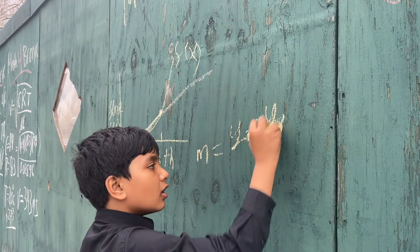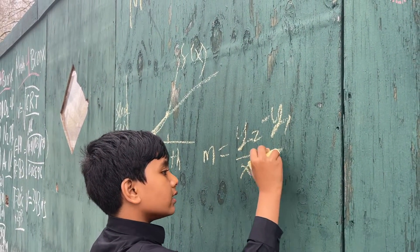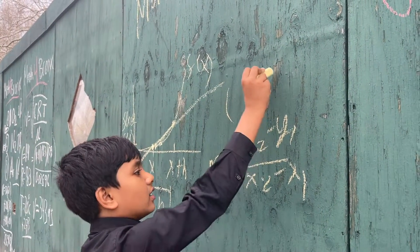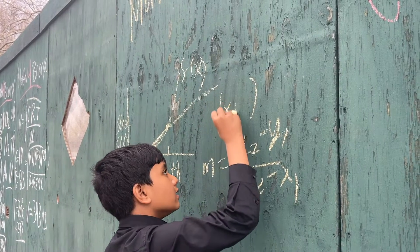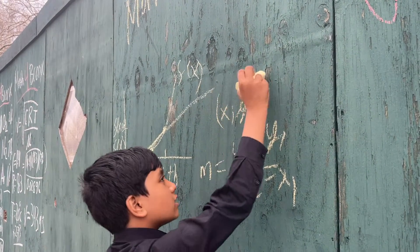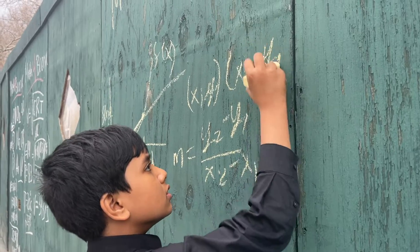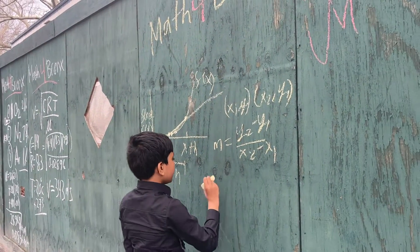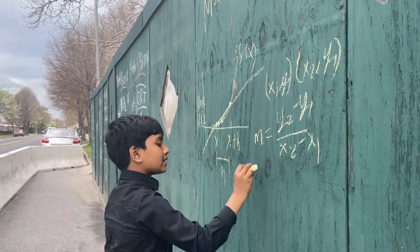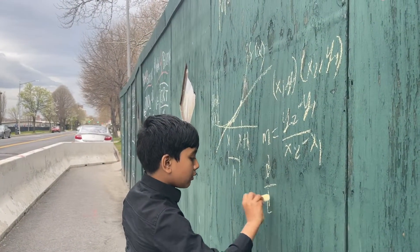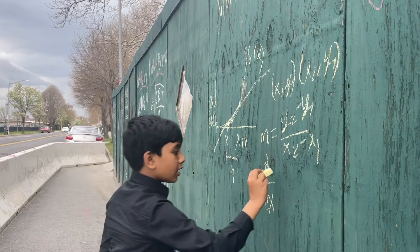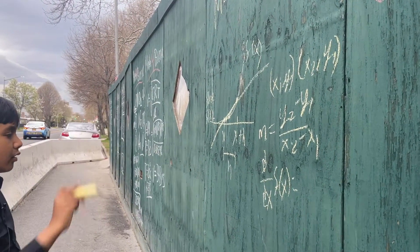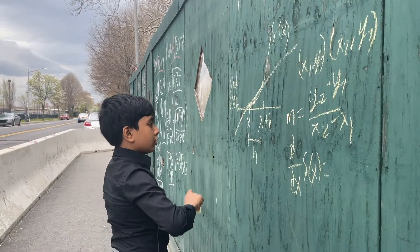If you recall, the equation for slope is m equals y2 minus y1 over x2 minus x1, where the left coordinate is x1, y1 and the right coordinate is x2, y2. Now we plug in our values for y2, y1, x2, and x1, and this will actually give us our derivative, which we represent as d over dx of our function f of x.